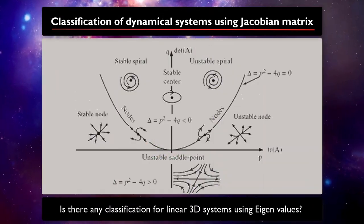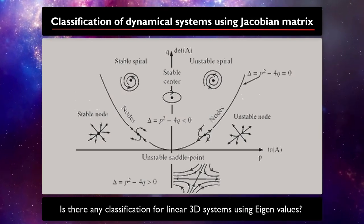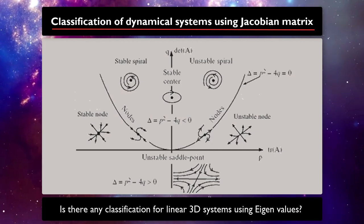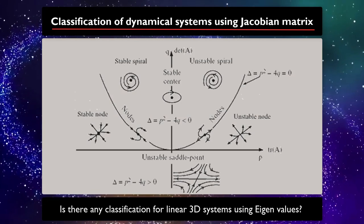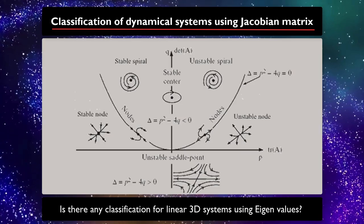We can also classify fixed points of a dynamical system using trace and determinants of a Jacobian matrix, and have different types of stable and unstable fixed points such as spiral fixed points or nodal behavior and others.